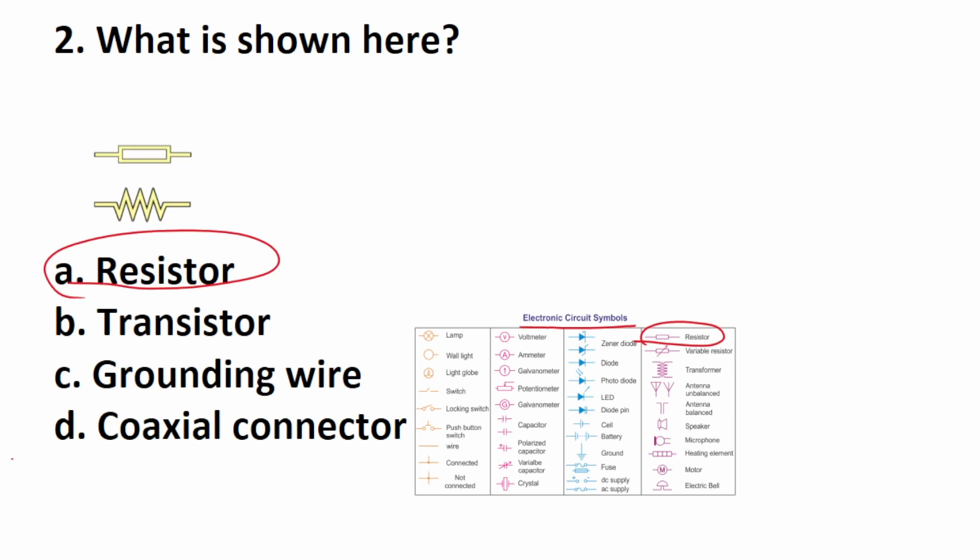Take a look at this chart. You should know the basics. Most of the basics are here. For example, you should know that this is what a capacitor looks like, this is what a battery looks like, this is what a transformer looks like and so on. So that is that one.